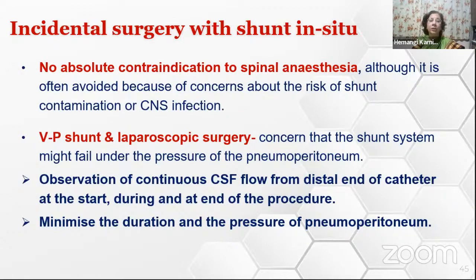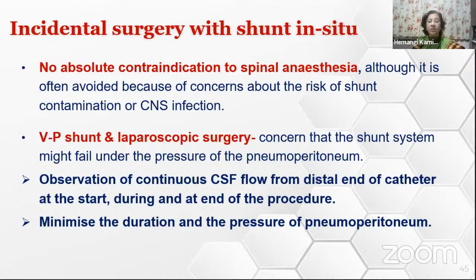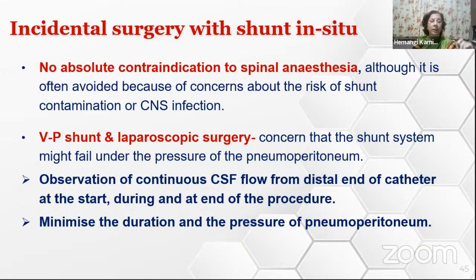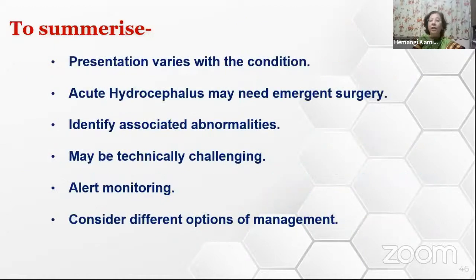If a patient comes for incidental surgery with a VP shunt in situ, there is no absolute contraindication for spinal anesthesia, though many anesthesiologists would avoid it due to concern about CNS infection risk. If they come for laparoscopic surgery, there is concern the shunt system may fail due to pneumoperitoneum pressure—the surgeon can intermittently check CSF flow while pneumoperitoneum is created, and the duration and pressure of pneumoperitoneum should be minimized. If a functioning VP shunt patient comes for neurosurgery, sitting position is avoided because air can directly enter the heart when the ventricles are open.